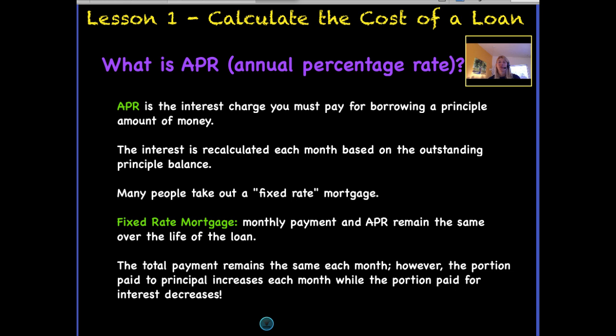Many times people take out a fixed-rate mortgage because they want the security of knowing their interest rate will stay the same. With a fixed-rate mortgage, your monthly payment and interest rate remain the same over the life of the loan. However, even though your payment remains the same each month, the amount you pay to principal will increase over time while the amount you pay for interest decreases. I'm going to show you an amortization schedule so that will make more sense.